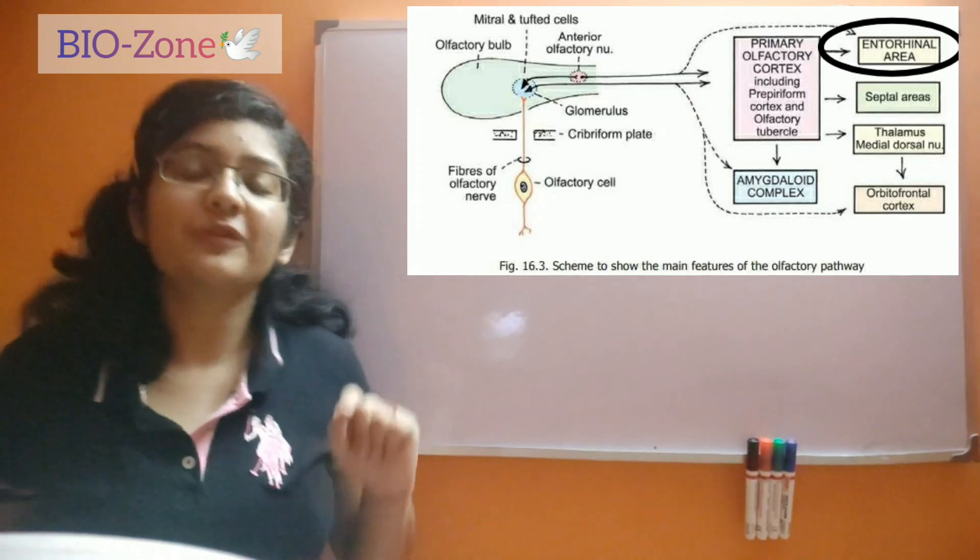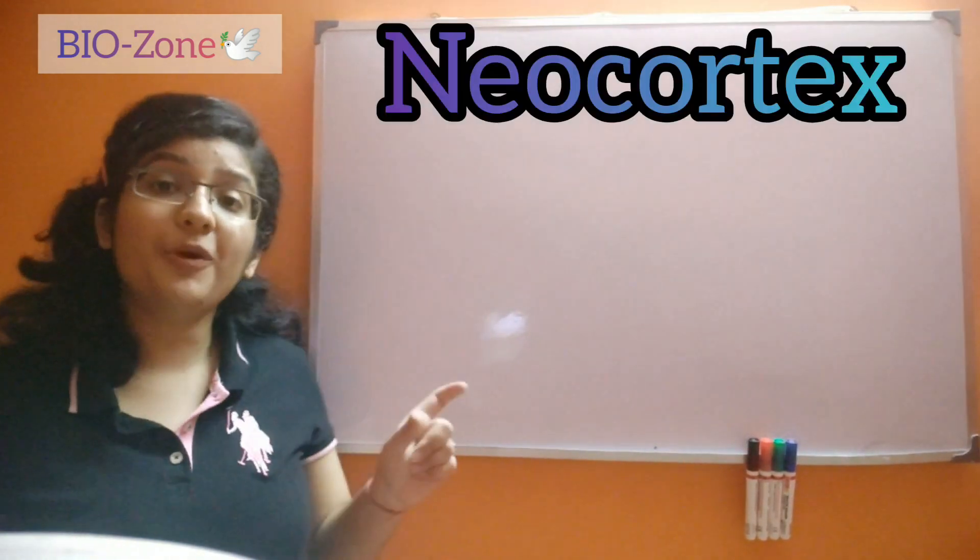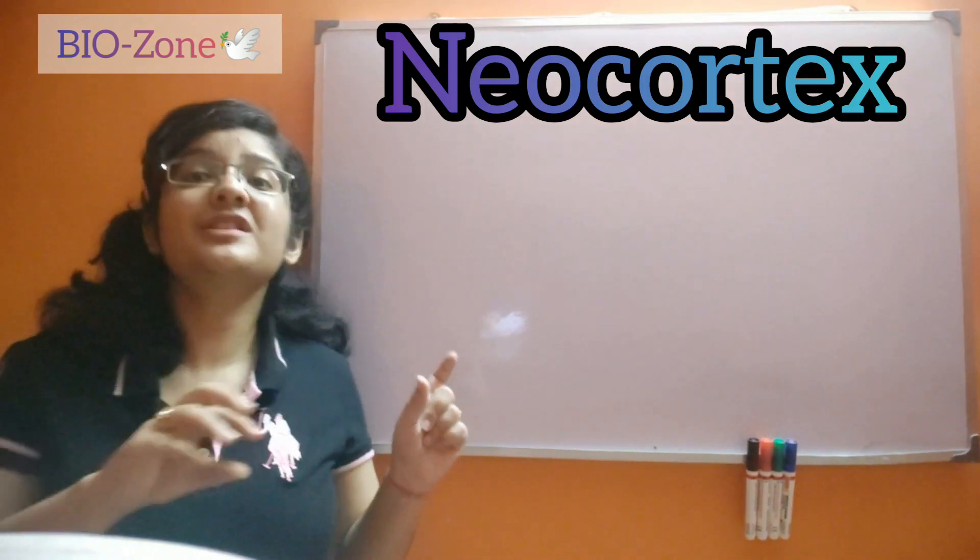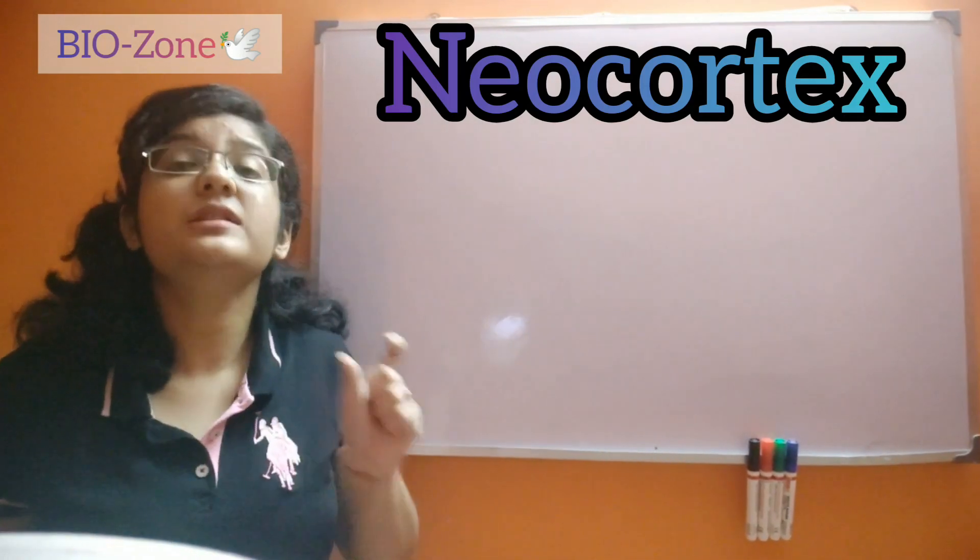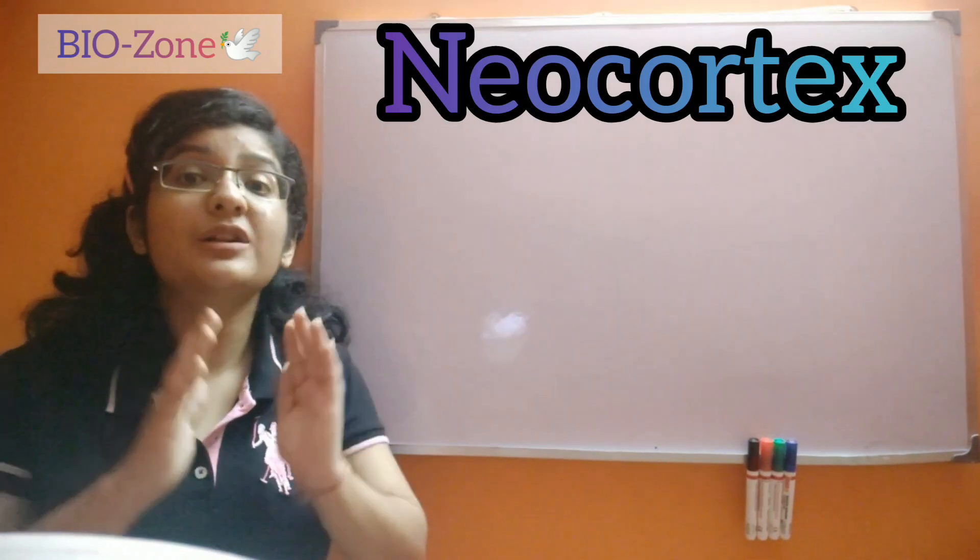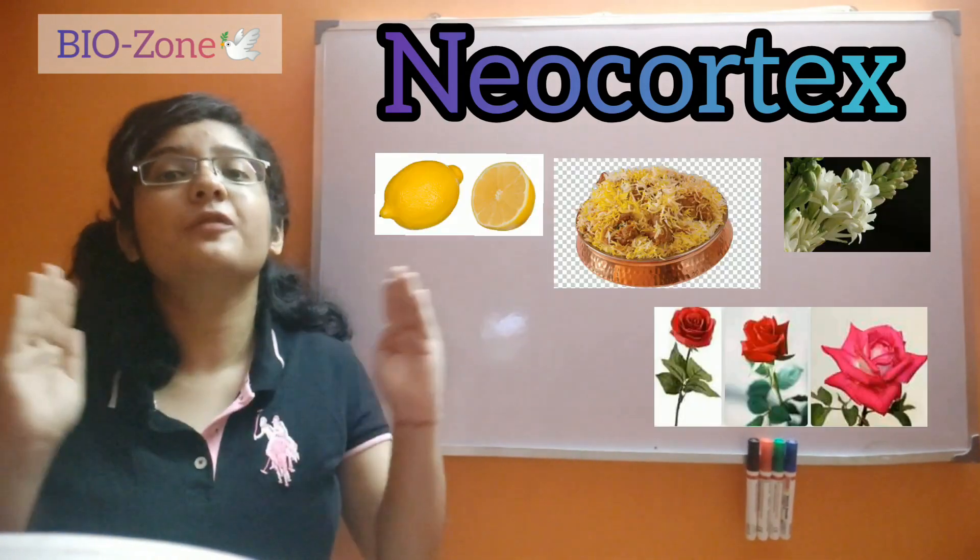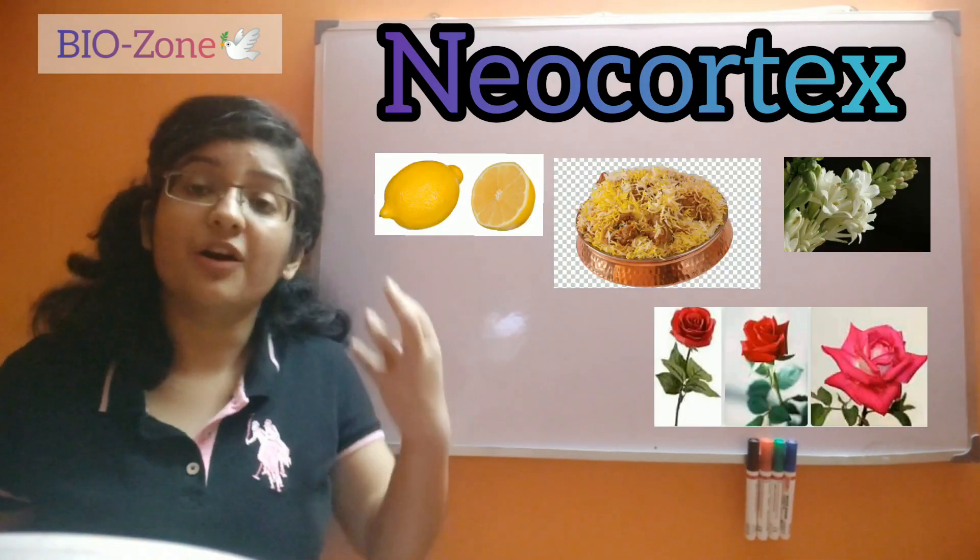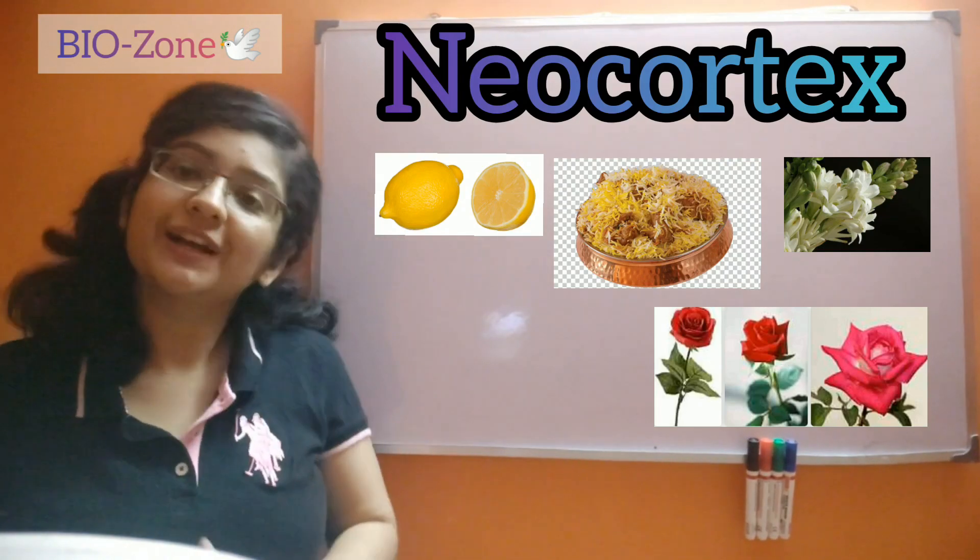Apart from that, we have another component where the branches of the olfactory tract go, which is called the neocortex. Here we also can discriminate different types of scents or smelling components.